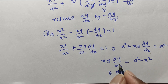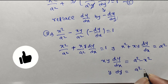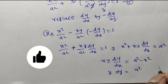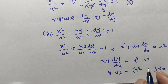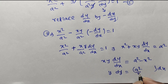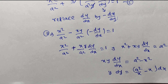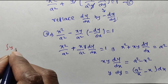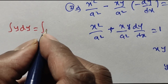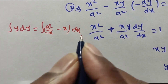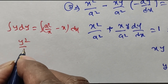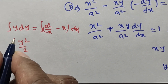Separating variables, we write y dy on the left and move x to the right: we get y dy = (a²/x − x) dx. Integrating both sides: ∫y dy = ∫(a²/x − x) dx.